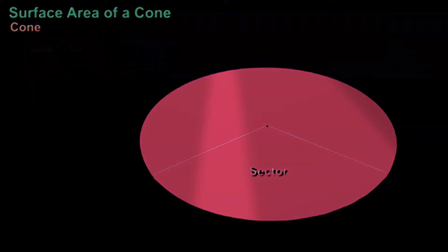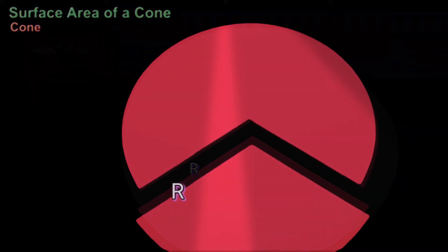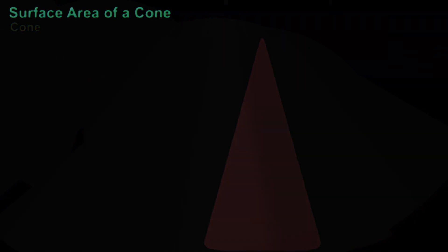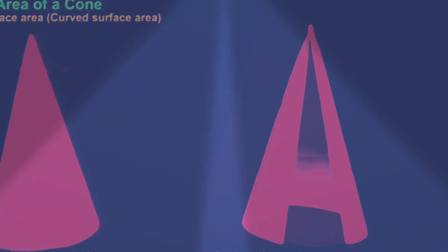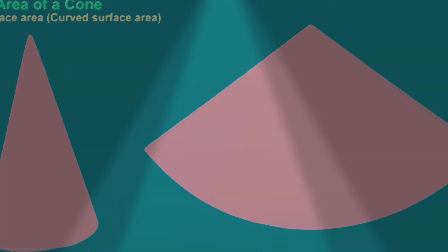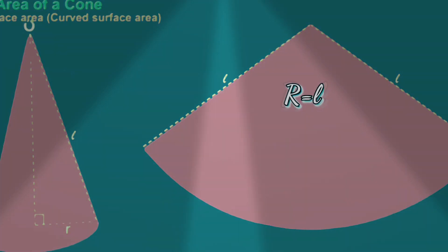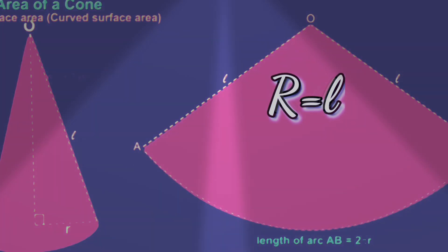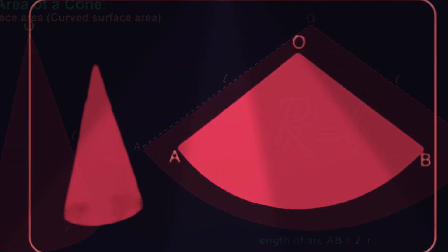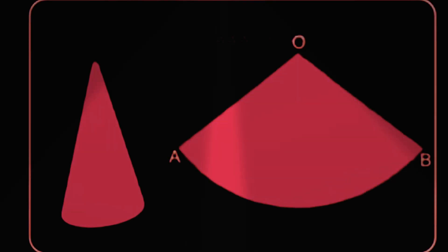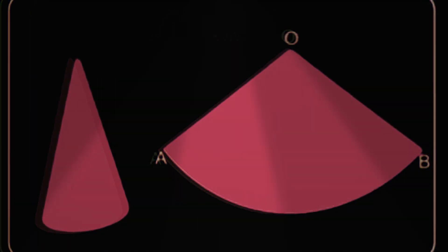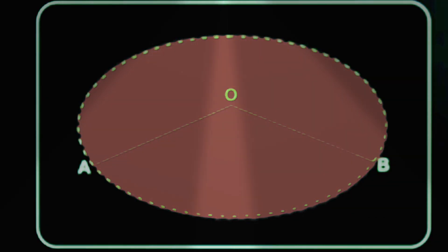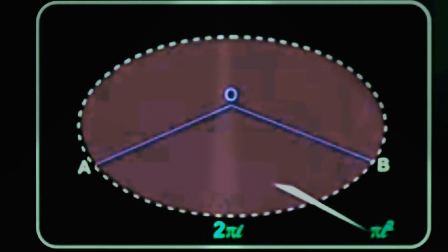For the calculation of total surface area of a cone, first we take a sector to calculate the curved surface area. The curved surface area of a cone equals the area of a sector cut from a circle. Here, the slant height of the cone equals the radius of that circle, so R equals L. The arc length AB equals 2πR, and the curved surface area equals the area of the sector, calculated as arc length AB divided by the circumference of the full circle, multiplied by the area of that circle.